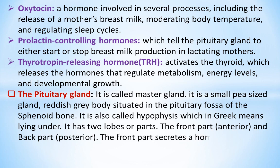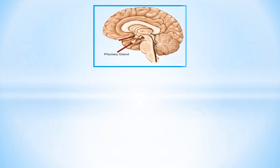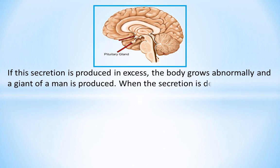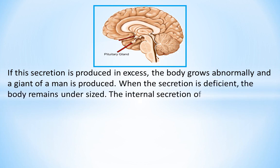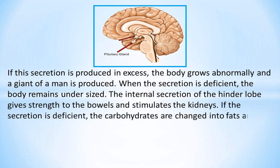The front part secretes a hormone which regulates the growth and development of the body. If this secretion is produced in excess, the body grows abnormally and a giant is produced. When the secretion is deficient, the body remains undersized. The internal secretion of the hinder lobe gives strength to the bowels and stimulates the kidneys. If the secretion is deficient, carbohydrates are changed into fats and the body becomes abnormally fat.